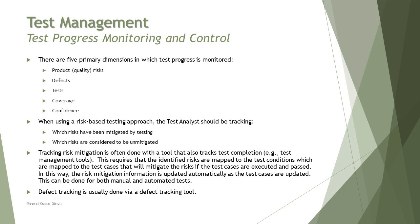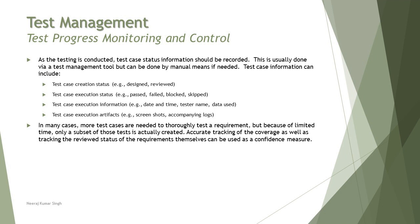Similarly, for defect tracking, all information about defects is captured with the help of defect management tools. When it comes to execution, additional information needs to be added to the management process, such as: test case creation status (designed, reviewed, executed), test case execution status (fail, pass, block, skip), test case execution information like date, time, and tester name, and test case execution artifacts such as outcomes, logs, and screenshots.